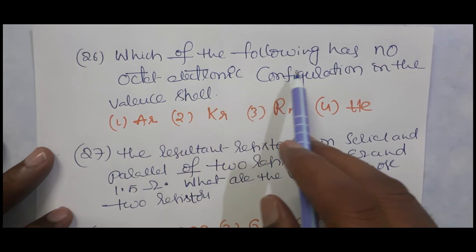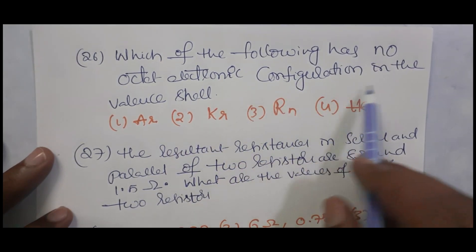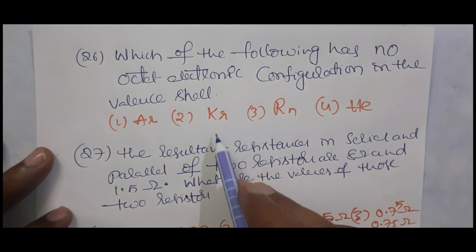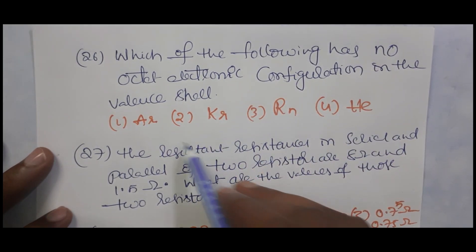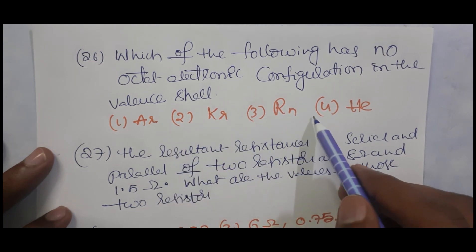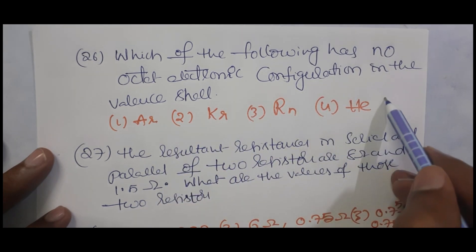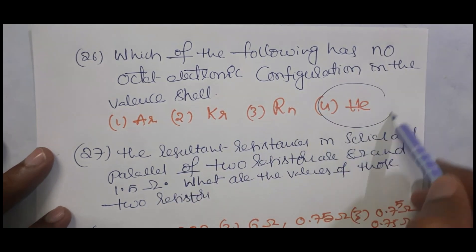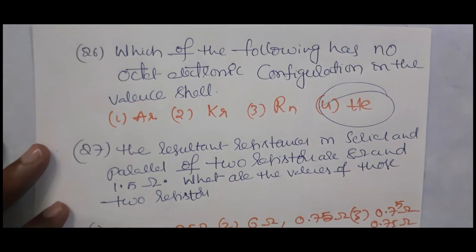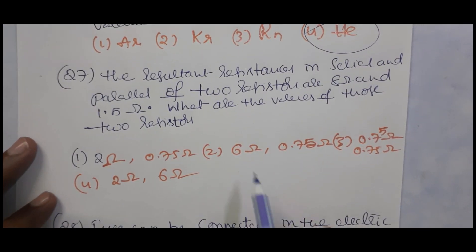Which of the following has no octet electronic configuration in the valence shell? Argon, krypton, and radon have ns² np⁶ configuration (octet). Helium is the exception — it has only ns² configuration, so it does not have an octet.